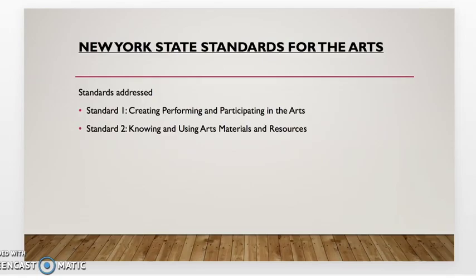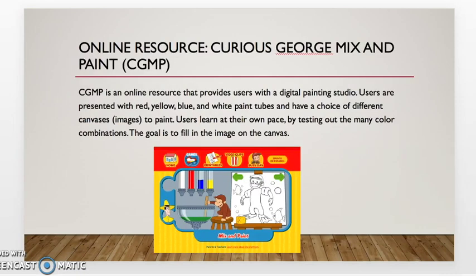These are the New York State standards for the arts addressed in this lesson. The online resource we're going to talk about is Curious George Mix and Paint by pbskids.org. It is an online resource that provides users with a digital painting studio. Users are presented with red, yellow, blue, and white paint tubes and have a choice of different canvases to paint. Users learn at their own pace by testing out the many color combinations, with the goal of filling in the image on the canvas.